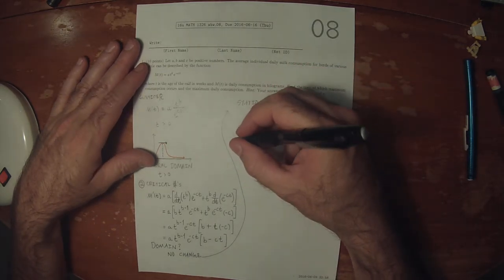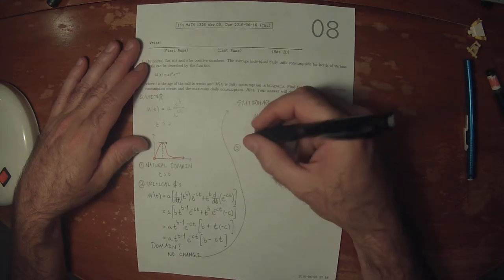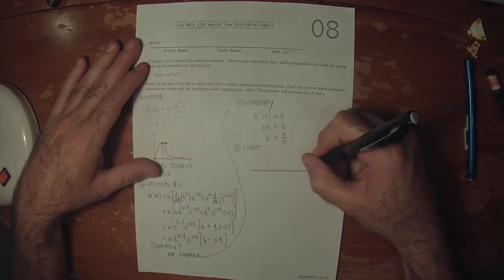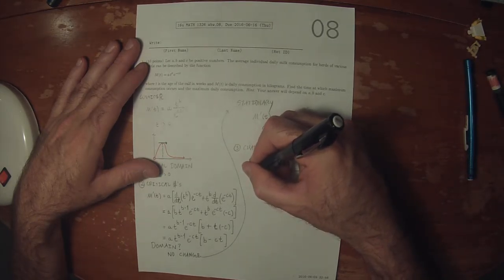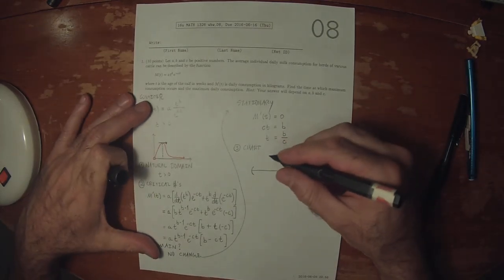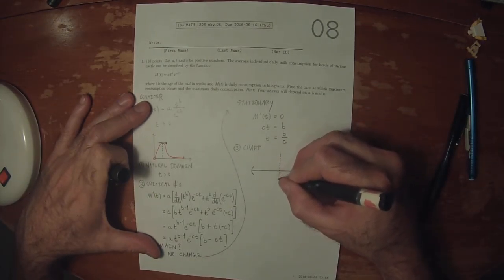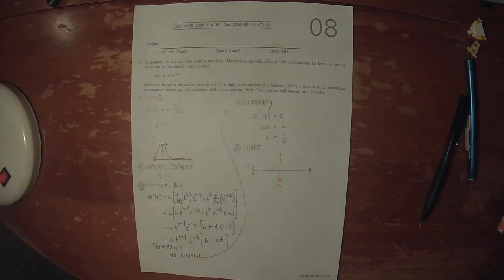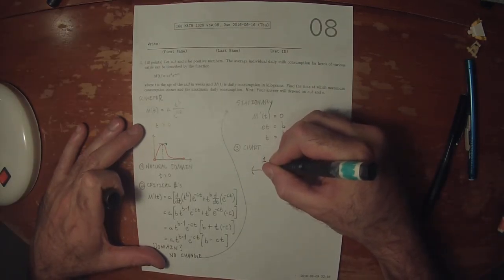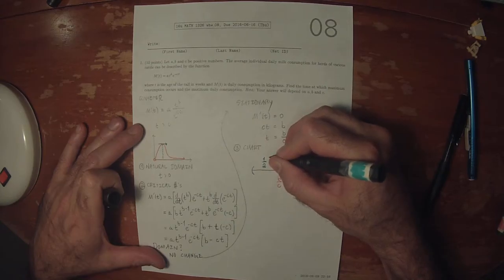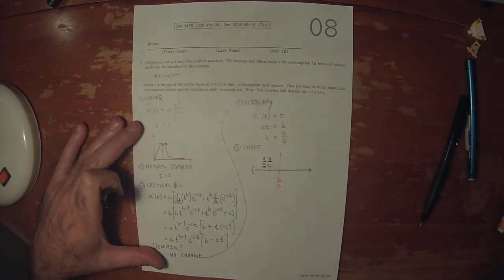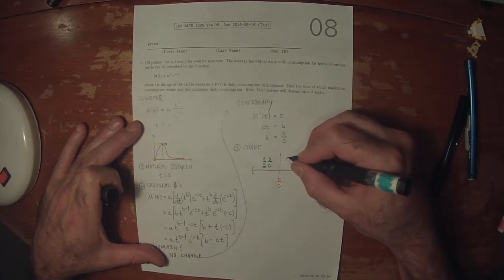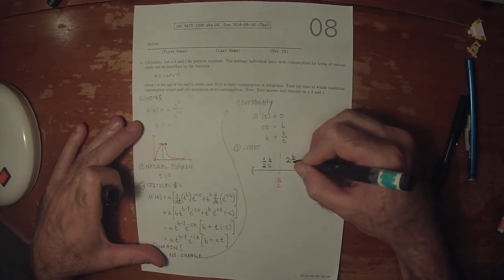So now we can make the chart. B over C. So we can do half B over C, we'll be between zero and B over C. And we can do twice B over C, we'll be to the right.